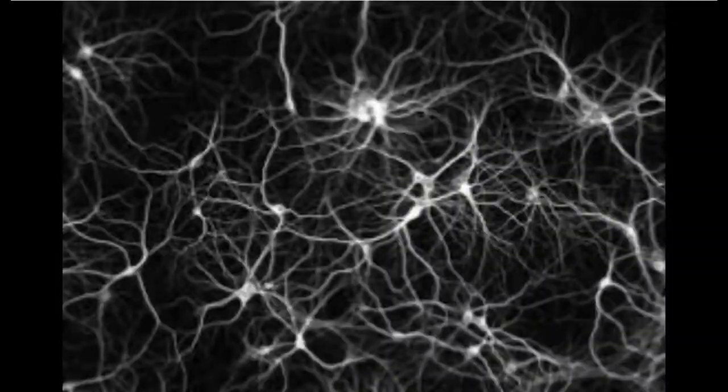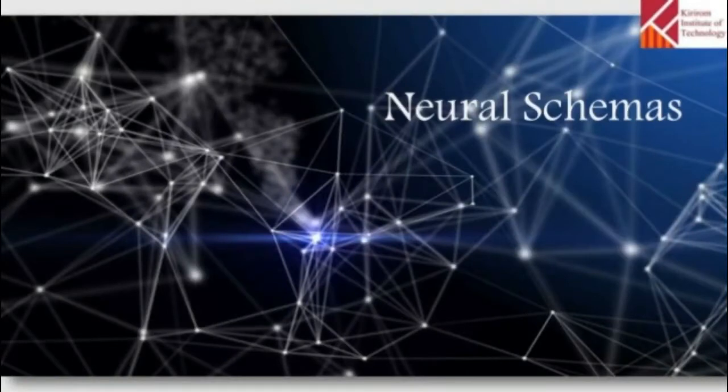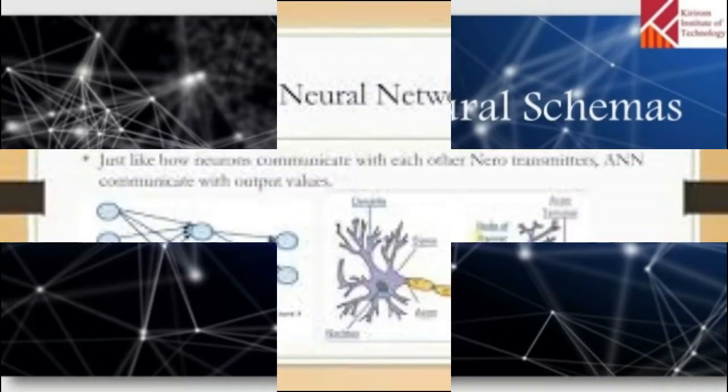What is a neural network and how does it work? A neural network is a network or circuit of neurons. In modern terms, an artificial neural network is composed of artificial neurons or nodes.